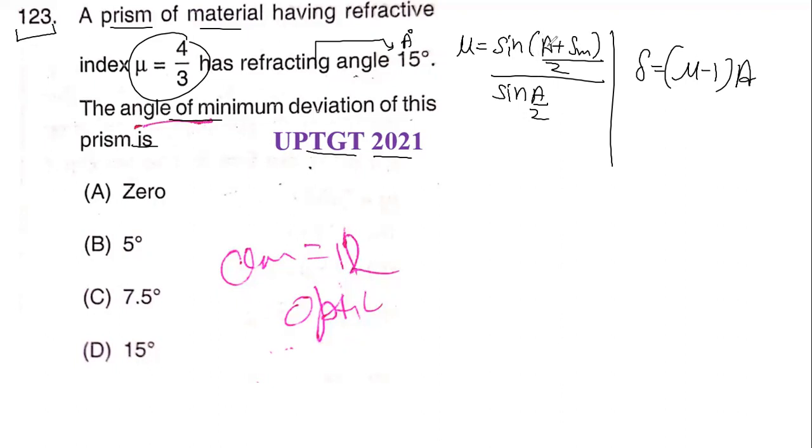This formula we use for small angle prisms. Now let's calculate: δ = (μ - 1)A = (4/3 - 1) × 15° = (1/3) × 15° = 5°.